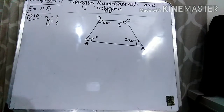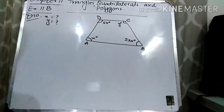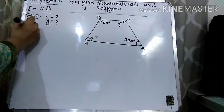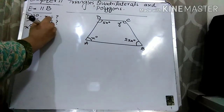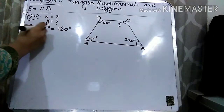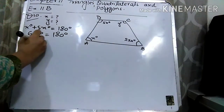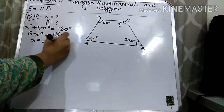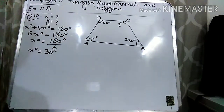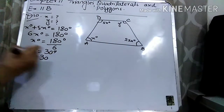Here we can use the property of parallel lines. x degrees and 5x — these two angles are inside the two parallel lines, so these are the interior angles. We can use the property that the sum of interior angles of parallel lines is equal to 180 degrees. So 5x plus x gives 6x degrees equal to 180 degrees. This 6 is multiplying; when we move it to the other side it will divide. x equals 180 divided by 6, which is 30 degrees. So the value of x is 30.